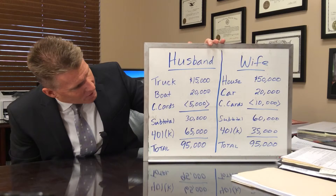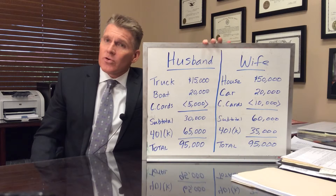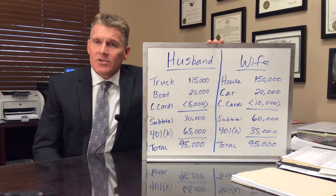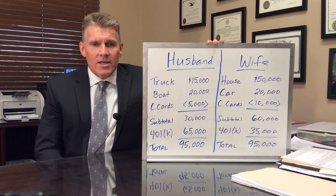Now if you look at the whiteboard, when you get to that point, you can see that we've got a subtotal where the husband has $30,000 net and the wife has $60,000. So to make the division of assets equal, we use the 401k to do that — we give the wife $35,000 from the 401k and the husband $65,000 from the 401k. In that way, each party ends up with $95,000 net. That's an example of how assets and debts get divided in a divorce.